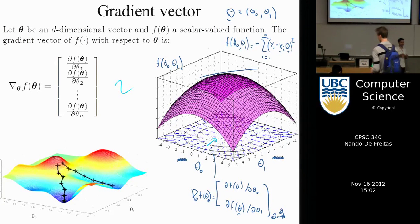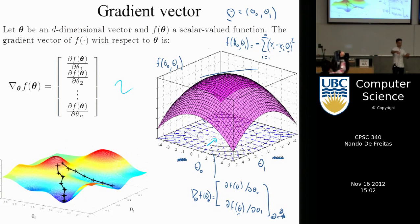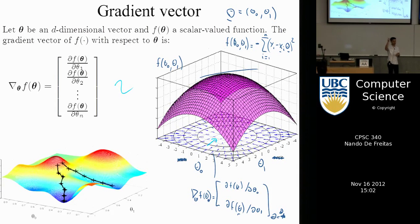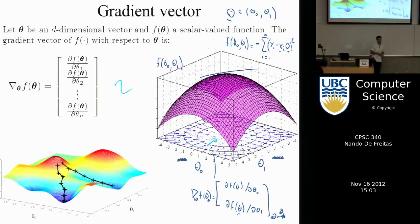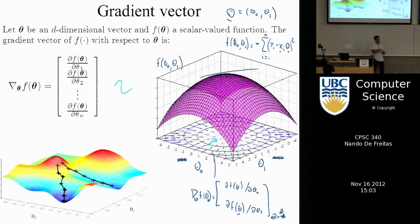Gradients are perpendicular to the contour levels. The contours are the points of equal height, so if something is perpendicular to the points of equal height, that means it is the direction of greatest descent — or greatest ascent if you go the other direction. That's why gradient algorithms are also called steepest descent. The same algorithm used to go up is the same one used to go down; you just change the direction of travel.